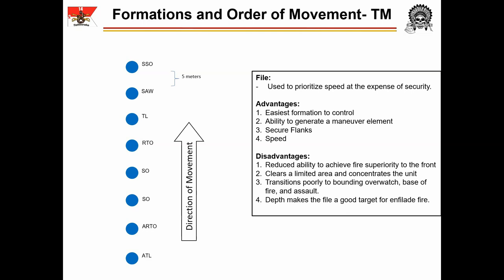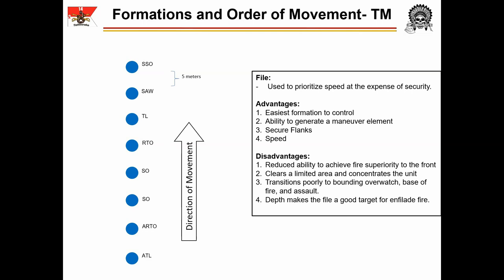There are four explicit advantages of the file. First, the control that it allows the team leader — there is almost no chance of elements becoming separated during movement. Second, it has the ability to generate a maneuver element with the front four soldiers; however, this element does not have immediate separation from the trail element, and to gain that separation it will have to move aggressively. Third, the file has secure flanks — the entire file can turn immediately to the right or left and employ all eight of the team's weapons against a threat. Fourth and finally, the file has significant speed: only one path needs to be cleared, and hence route selection is greatly expedited.